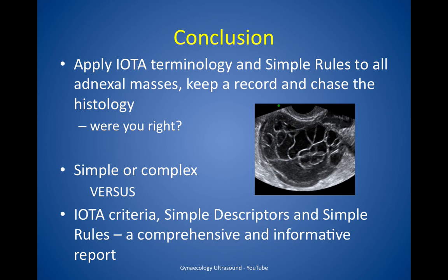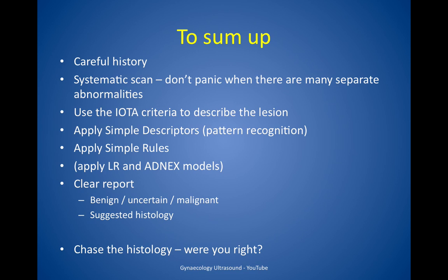In conclusion, you should apply IOTA terminology and simple rules to all adnexal masses, keep a record and chase the histology. You can go from a report that would just say simple or complex to one that uses IOTA criteria to describe the lesion, simple descriptors and simple rules, to write a really comprehensive and informative report. Take a careful history before you scan, scan systematically, and don't panic when there are many separate abnormalities.